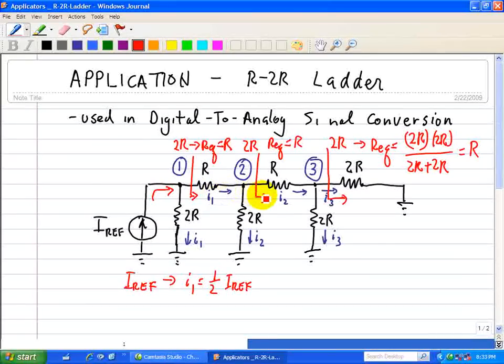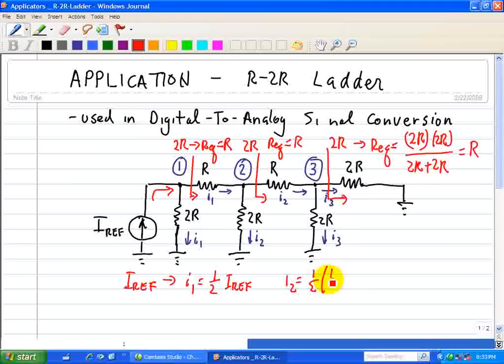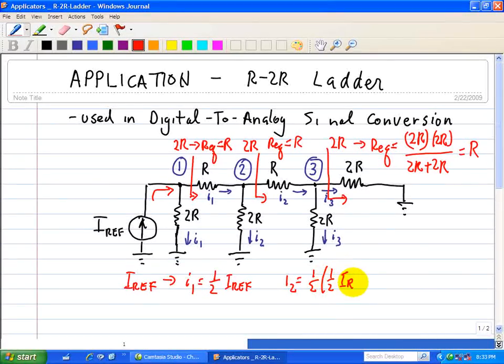Now look at this one. I2 is just when I1 enters node 2, half of the current goes through this 2R, and half the current goes through the rest of the network here. So I2 is just one half of I1, so it's just one half of one half of I reference, or one fourth of I reference.